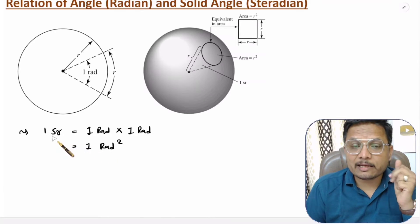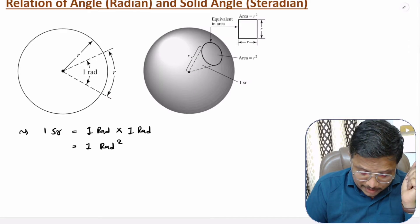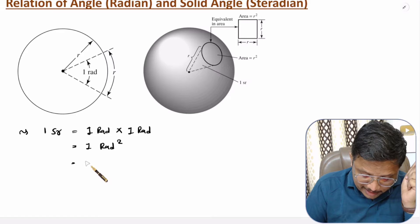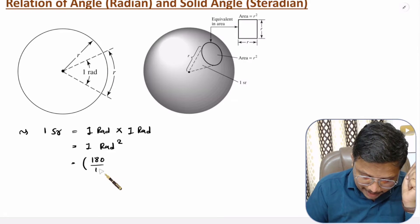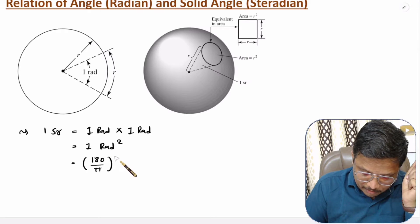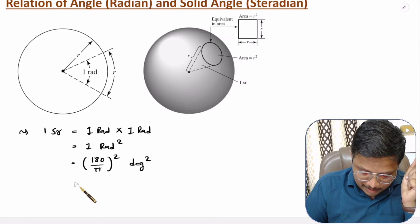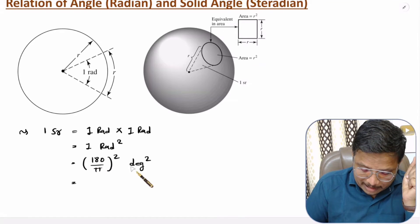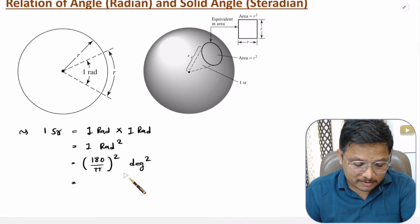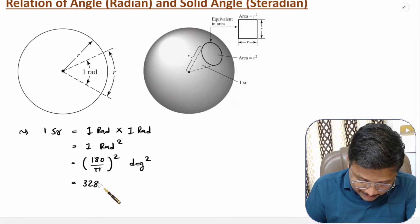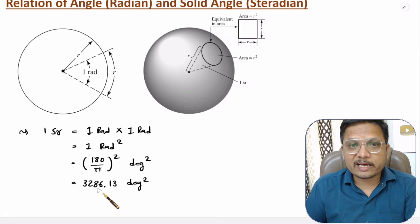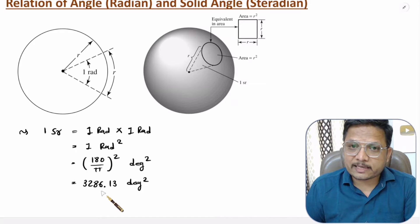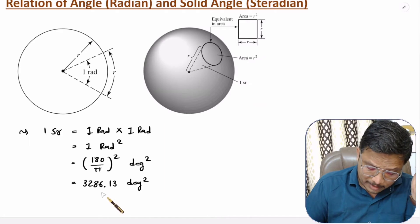To express 1 steradian in degree square, note that 1 radian = 180/π degrees. So 1 steradian = (180/π)² degree square. Calculating this gives 3286.13 degree square. So 1 steradian equals 3286.13 degree square.